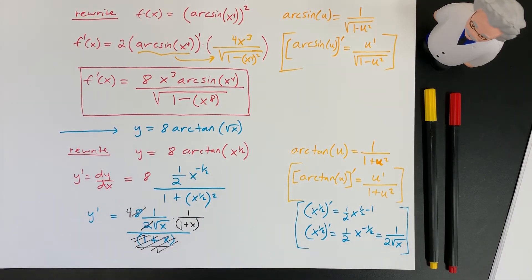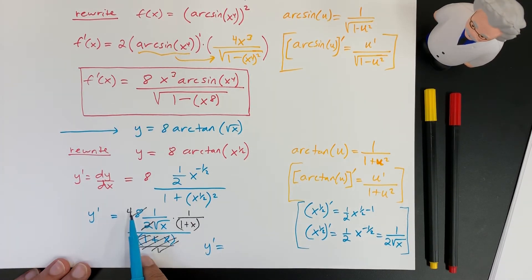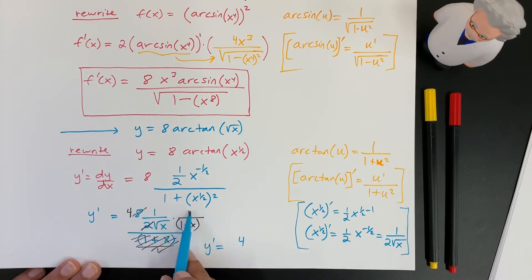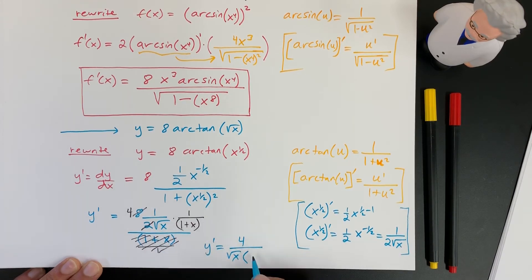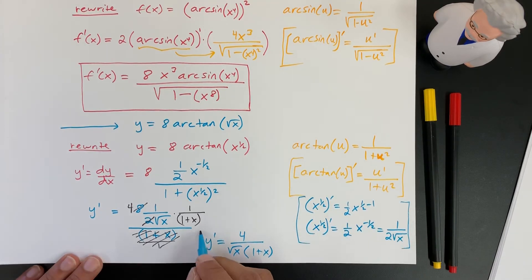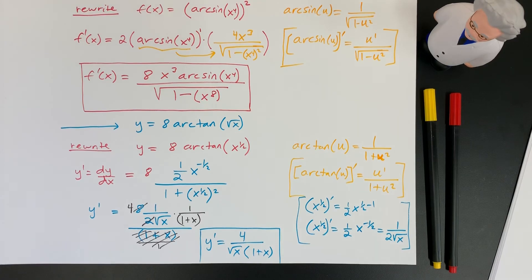And, finally, our y prime, so our derivative, is equal to 4. On the top, we have a square root of x. Down here. And, then we have 1 plus x left over. And, this is our derivative. Alright? Thank you.